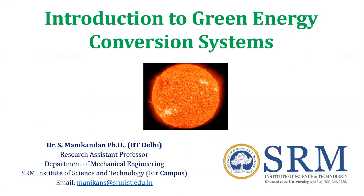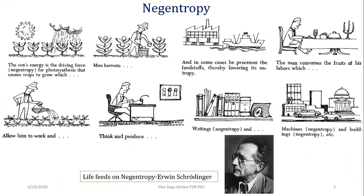Before starting the lecture, I wanted to share the concept of negentropy. Everyone is concerned with energy conversion and the efficiency of energy conversion systems. In the book 'What is Life?' written by Erwin Schrödinger, he wrote that life feeds on negentropy. Negentropy means negative entropy — entropy means disorderliness, so negative entropy means ordered systems.